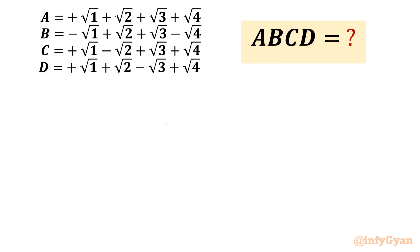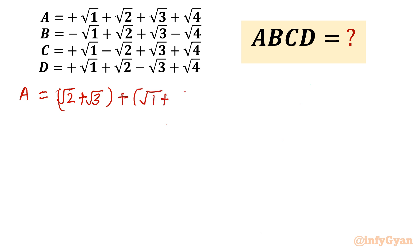I will begin with reconsideration of A. How can we consider it? So it is root 1 plus root 2 plus root 3 plus root 4. If you see B, it is root 2 plus root 3. So let me write A in that term: root 2 plus root 3, and then I will write root 1 plus root 4.